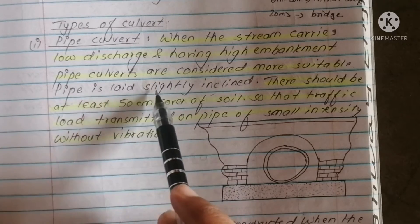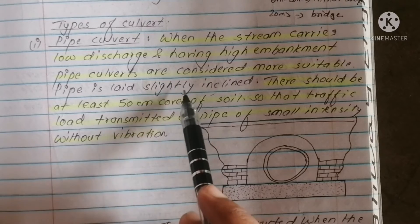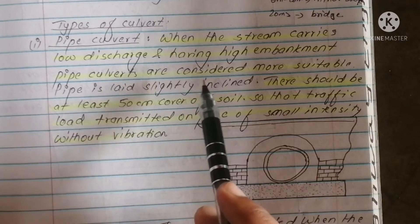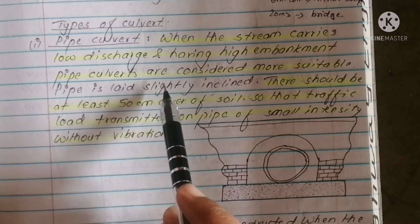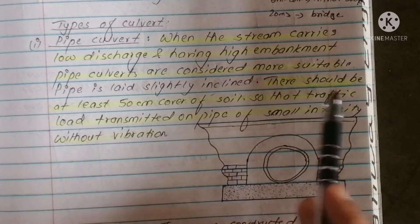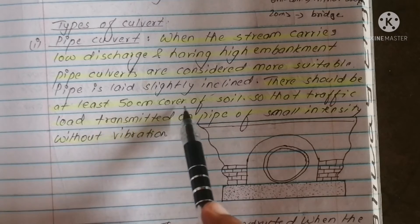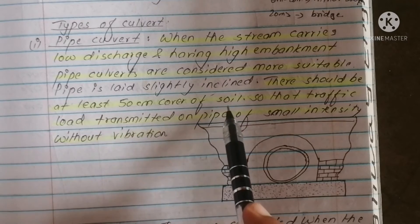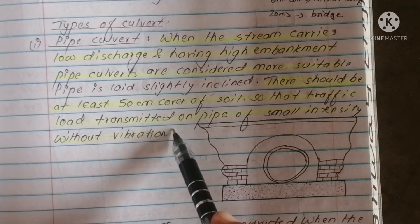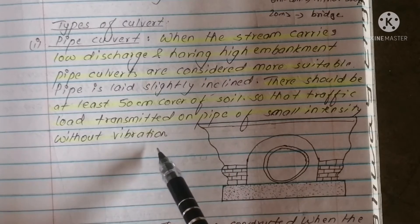The pipe is slightly inclined. There should be at least 50 cm cover of soil, so that the traffic load transmitted on the pipe is of small intensity without vibration.